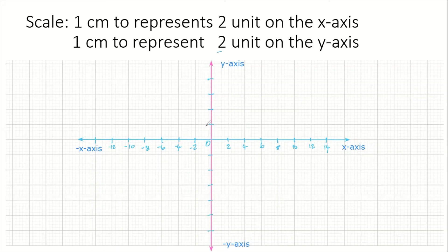We're just counting by two: two, four, six, eight going up. And on the negative side it's going to be negative two, negative four, negative six, negative eight, negative ten, negative twelve. And that's it — that is how you would represent the scale of one centimeter to two units on both axes.